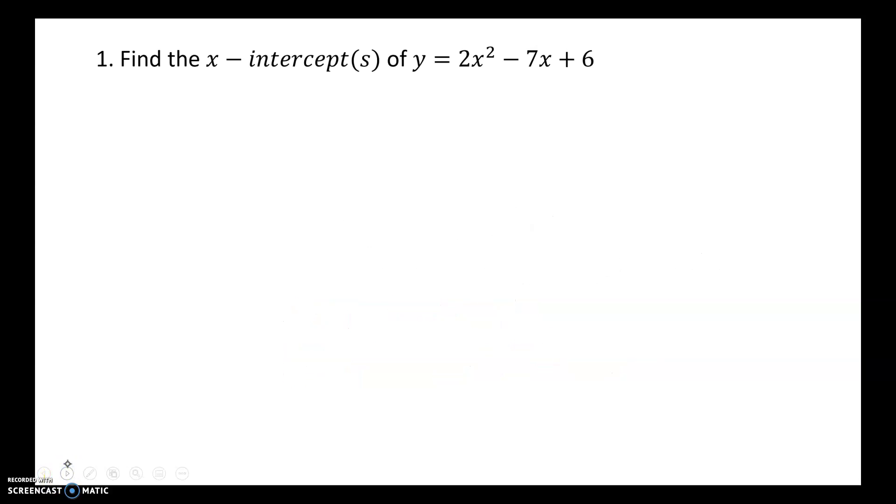All right, so find the x-intercepts of the given function. x-intercepts. I set my function equal to zero. And now I'm going to attempt to solve for x by factoring. a is equal to 2, b is equal to negative 7, c is equal to positive 6. I know when a is not equal to 1, factoring gets a little bit more challenging for you.